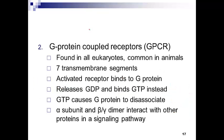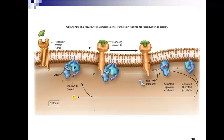G-protein coupled receptors get their name because they're associated with guanine-based nucleotides. In their off state, they are bound to GDP. Binding of the ligand to the receptor causes a change that results in the swapping — the exchange — of GDP for GTP. It is that GTP-bound form that ultimately creates the active receptor.